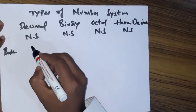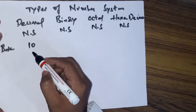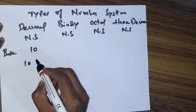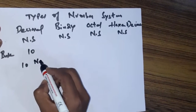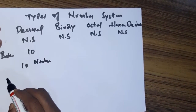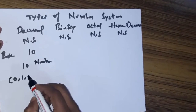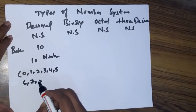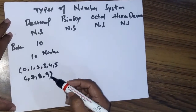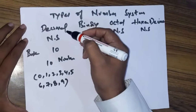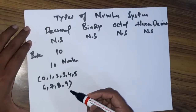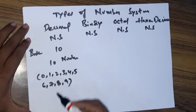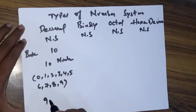The decimal number system has base 10. What is this base? It means we have 10 digits in it. Those 10 numbers are: 0, 1, 2, 3, 4, 5, 6, 7, 8, and 9. These 10 numbers are used in the decimal number system to represent any number.